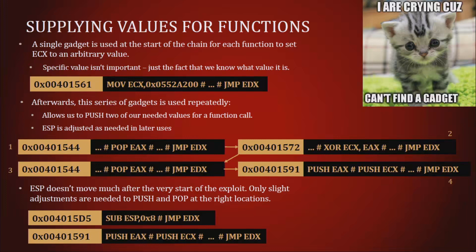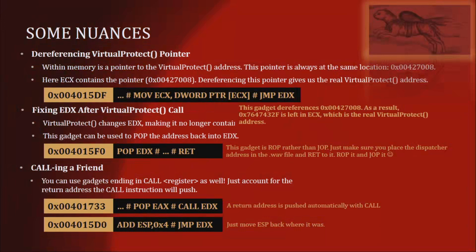We get ECX to a known value, modify it with XOR, pop values into EAX, perform XOR operations, push two values onto the stack, compensate for ESP, and dereference the VirtualProtect pointer — which we'll use a little later on. We can also jump to other registers if we want to shuffle around the dispatcher gadget address.